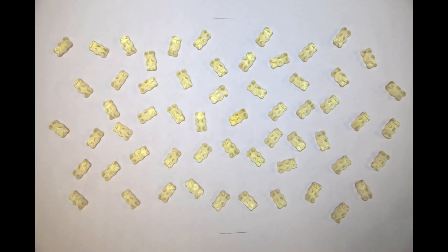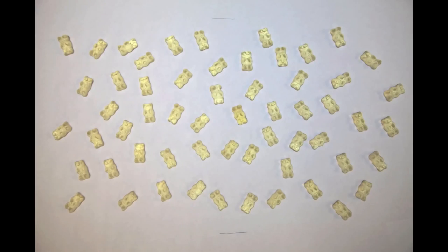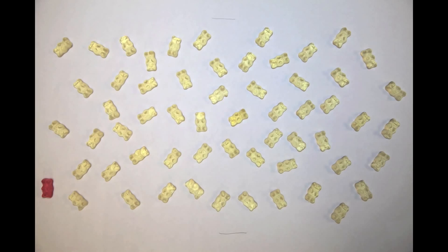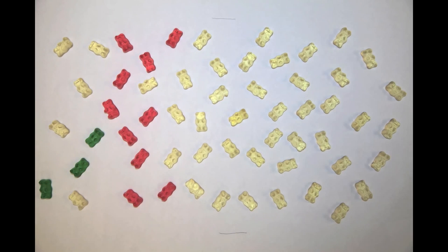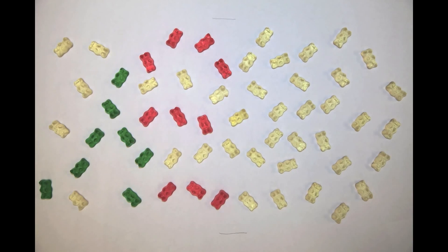So here's our model. We have a population of white susceptible gummy bears and we introduce an infectious disease. It spreads through the population of susceptible bears and infects them, turning them red. Some bears will die of the disease and disappear from the population, but the ones that don't will develop immunity and move into the green recovered category.